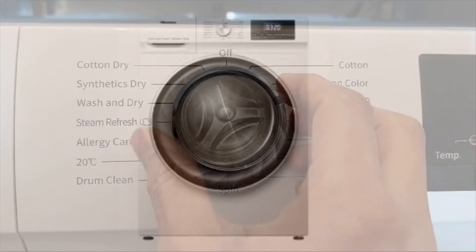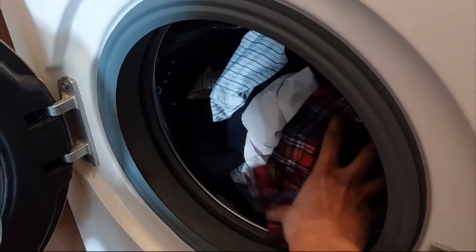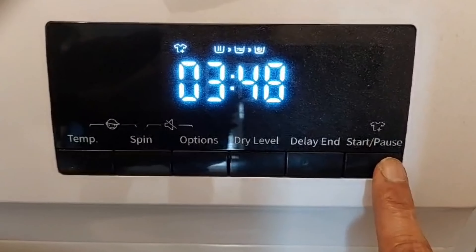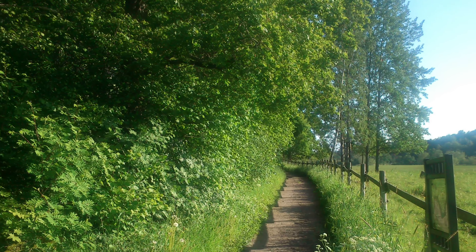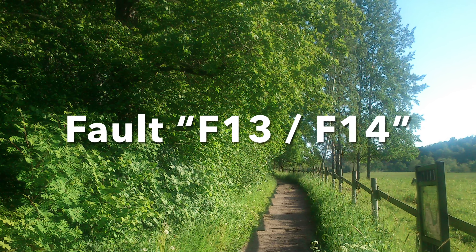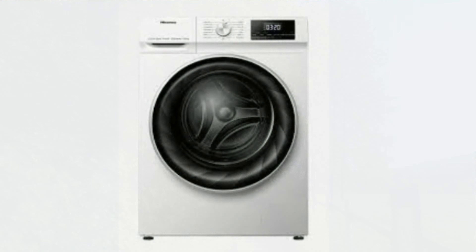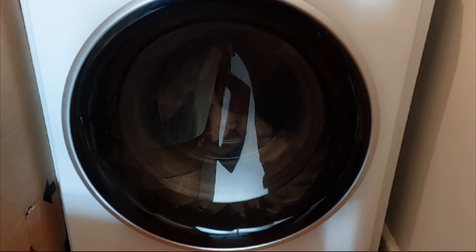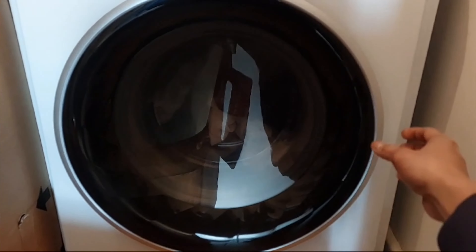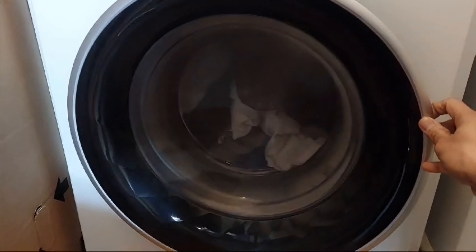To solve F06, switch off the machine, remove some items, and switch on the machine again — hopefully this should solve the error. Next come F13 and F14 errors, which are basically related to door lock and unlock. Sometimes the door lock is not working correctly.